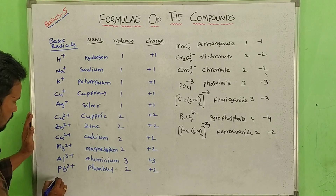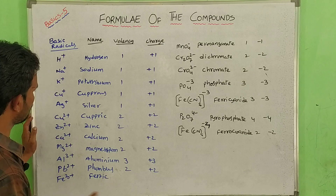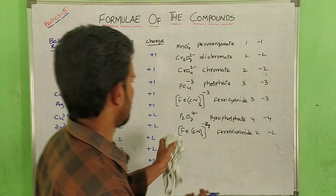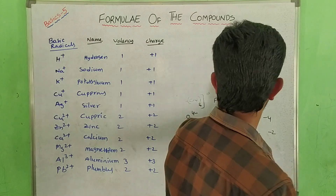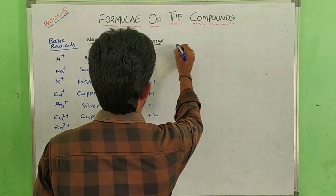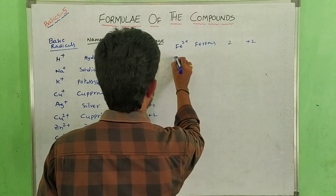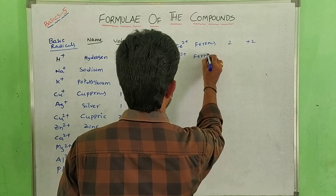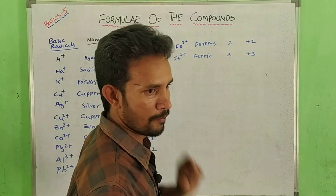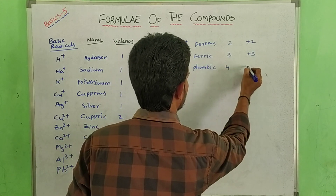Next, Fe 2 plus is known as ferrous. Valency 2, charge plus 2. Fe 3 plus is known as ferric. Valency 3, charge plus 3. Aluminium is plus 3 and Fe 3 plus is also plus 3. Next, Pb 4 plus — known as plumbic. Valency 4, charge plus 4.